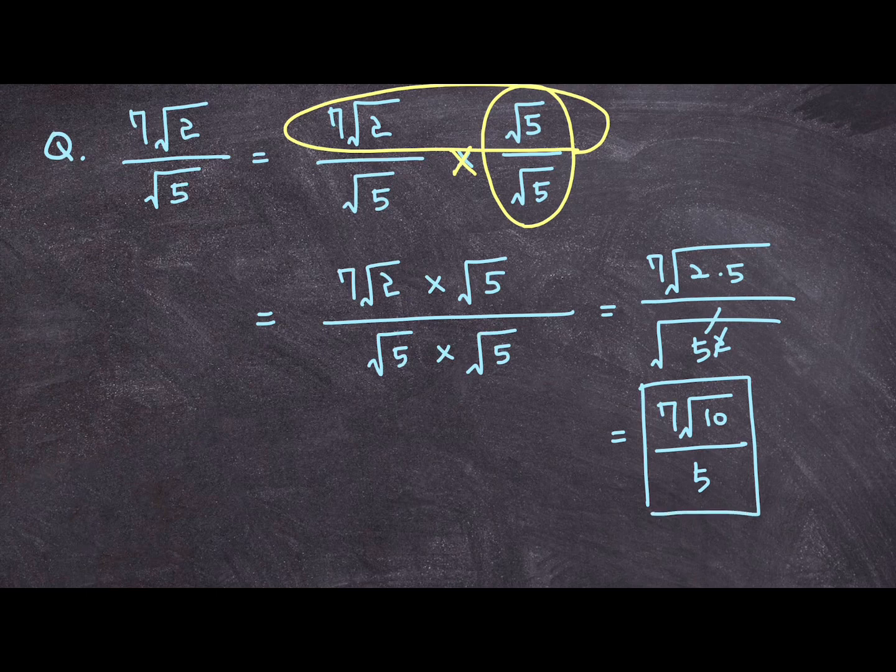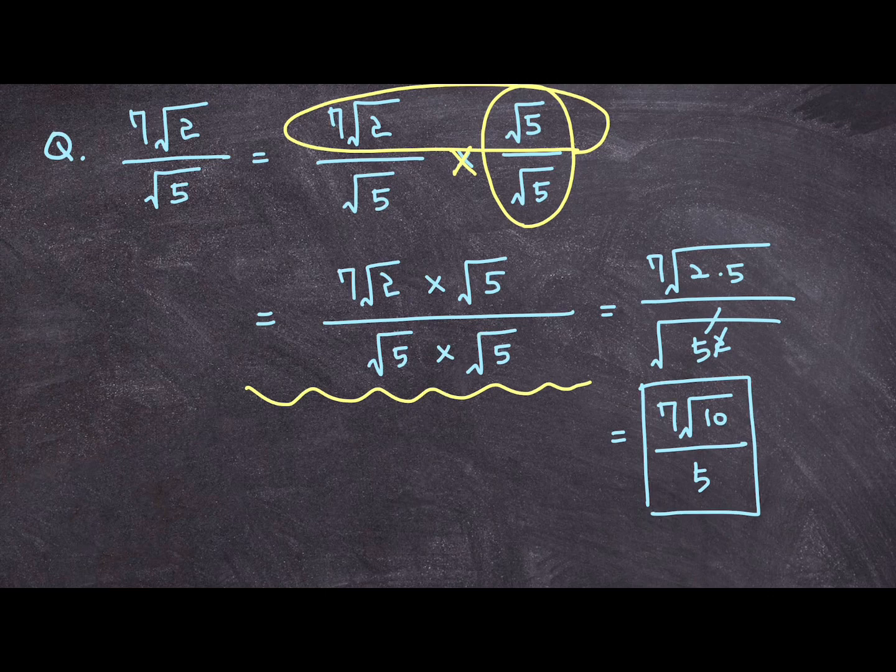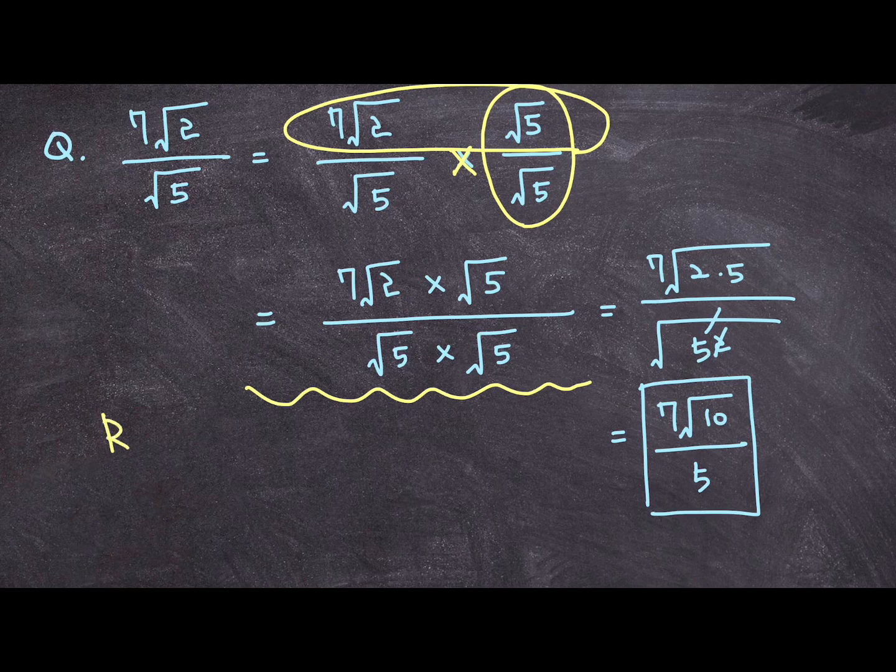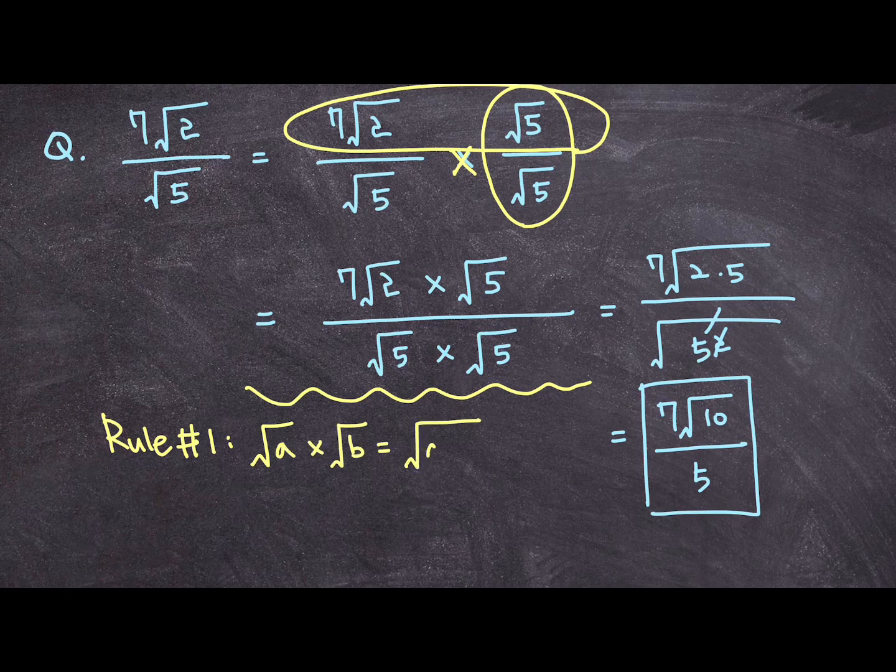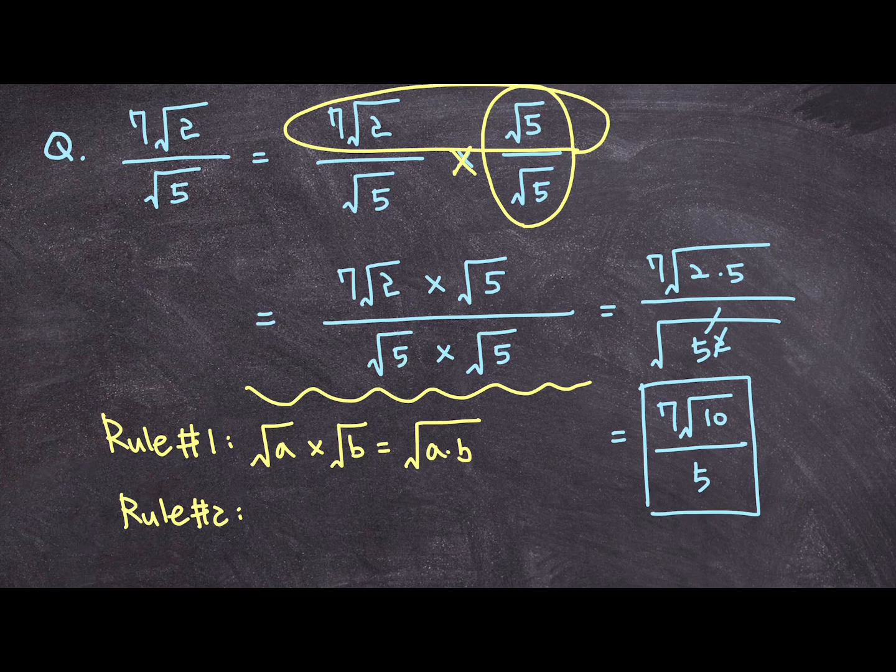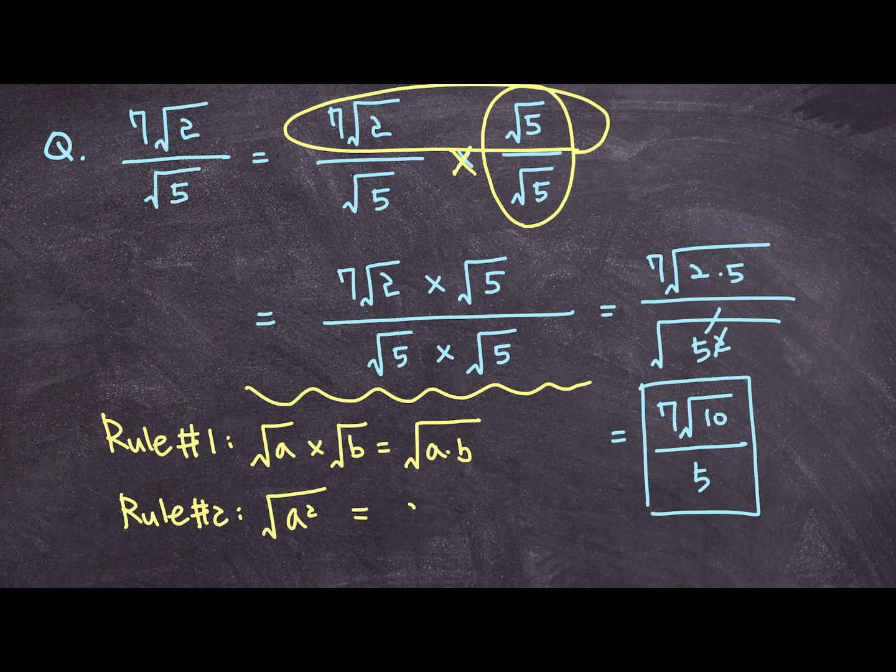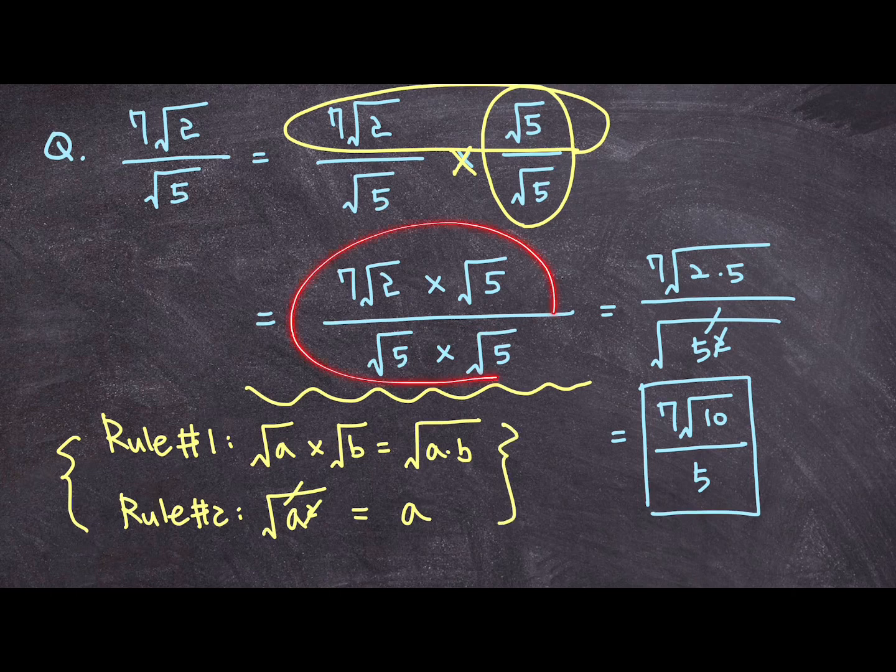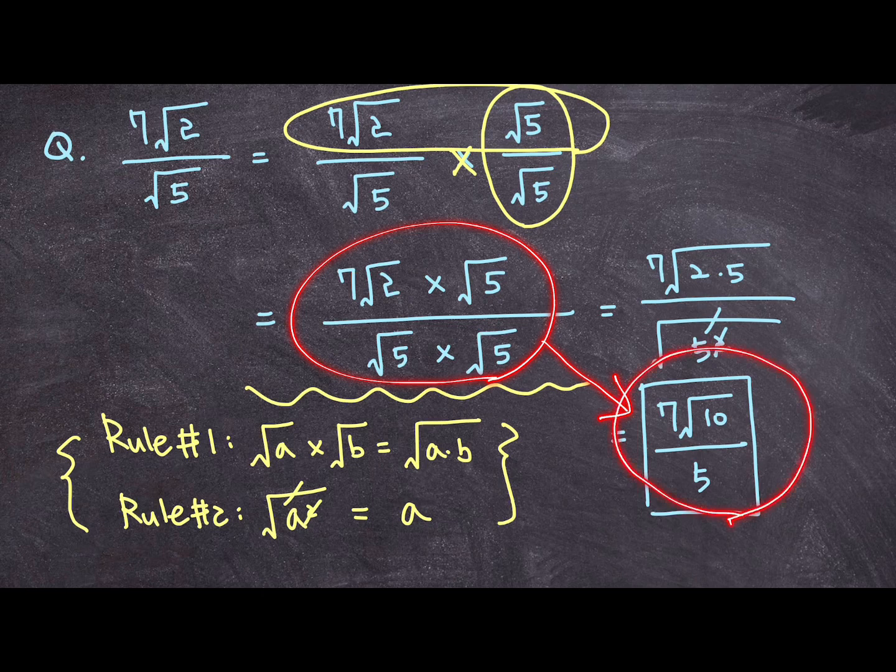Now in order for you to process this multiplication, you needed to know two rules of radicals. Rule number 1 is that square root of a times square root of b is equal to square root of a times b. And rule number 2 that you needed to know in order to process the multiplication above is square root of a squared is equal to a. Because you can think of it this way. You can cancel the square root with the power of 2. And hence square root of a squared ends up becoming equal to a. So as long as you know these two rules, you could process this multiplication and end up with our final answer of 7 square root of 10 over 5.